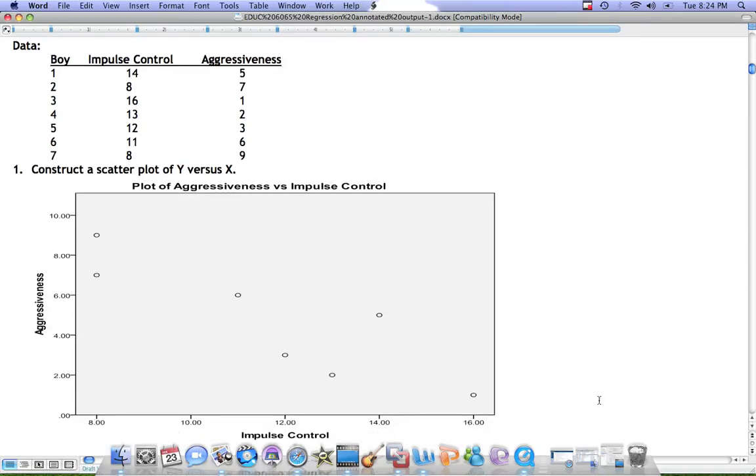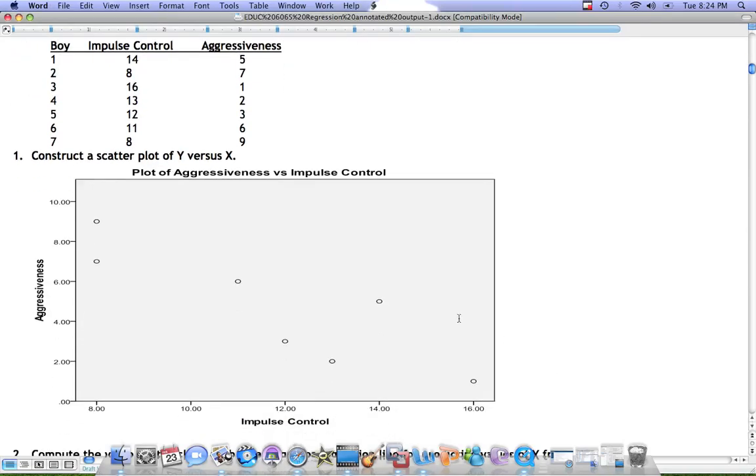that the data have a negative relationship where higher scores on impulse control reflect lower aggressiveness and lower scores on impulse control reflect higher aggressiveness.